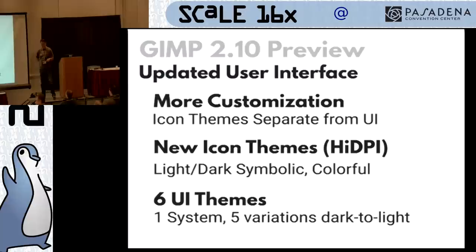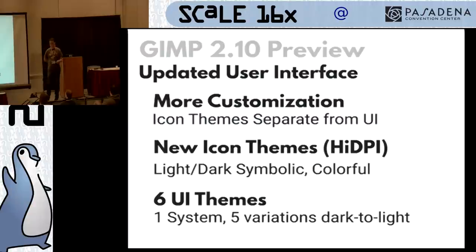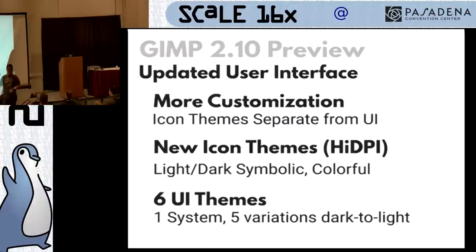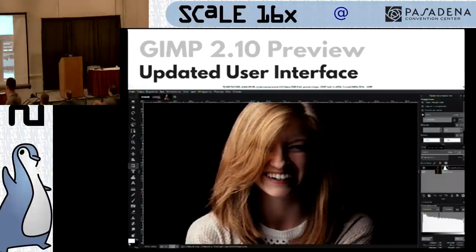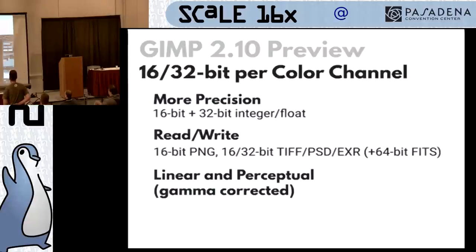A quick preview of what you can expect in 2.10 — we're pretty far along the 2.9 developer series right now, looking at a 2.10 release probably when it's done. There's a lot of features in 2.9, and it's stable enough for daily use, especially for photographers — for three years now, something like this. We're looking at a lot more customization of the user interface. Icon themes will be separate from the UI, with new icon themes especially for high DPI work. That's what GIMP looks like now — one of the dark themes with a symbolic icon theme on the left. It looks more professional.